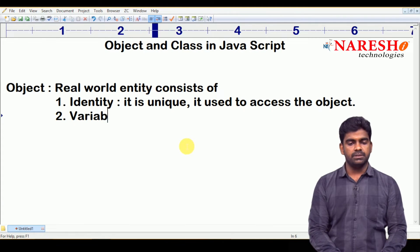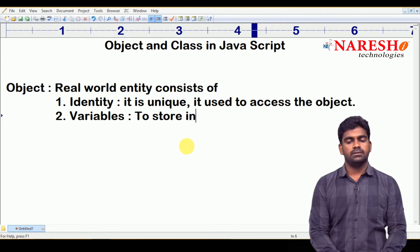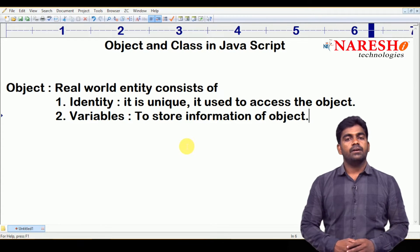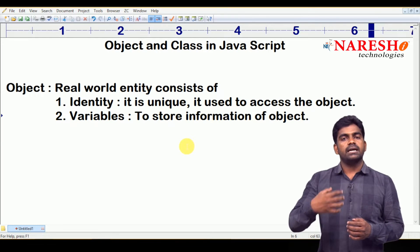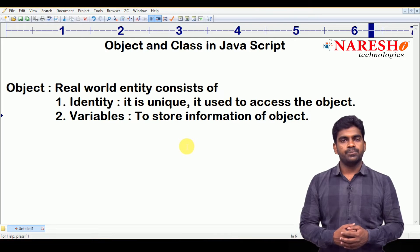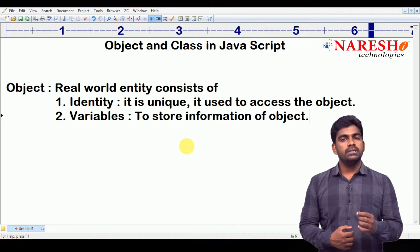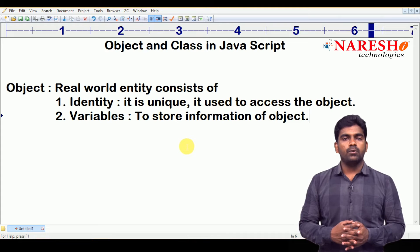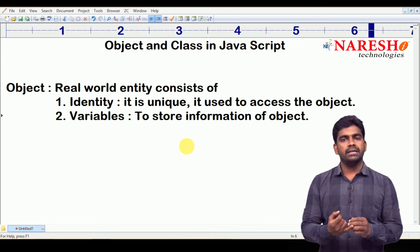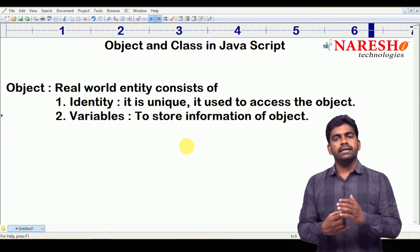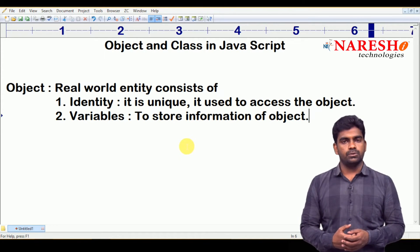And next, second one is a set of variables. Variables are just to store information of an object. Variables means data. I have some information. In the same way, every object has some information. If you take an account holder, what is an identity? How can you access an account holder uniquely throughout the world using account number? And what is the information of account holder? Just the name, mail ID, mobile number, address, balance, pin number. These things come under data. Where we are storing the information? Using the concept called variables only.